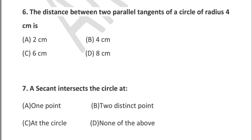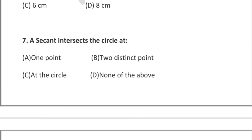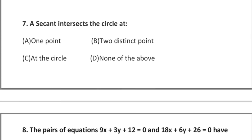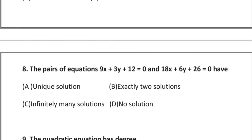Question 6: the distance between two parallel tangents of a circle of radius 4 cm is — option A: 2 cm, option B: 4 cm, option C: 6 cm, option D: 8 cm. Question 7: a secant intersects the circle at — option A: one point, option B: two distinct points, option C: at the circle, option D: none of the above.